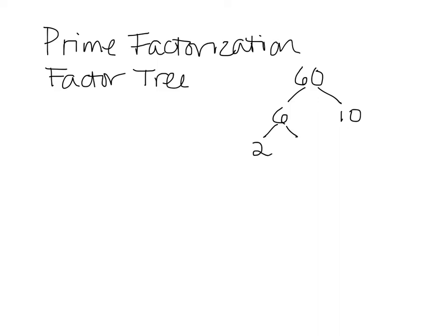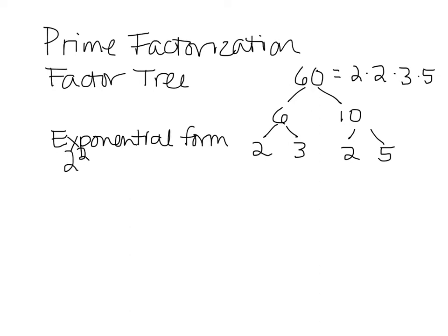And you just keep breaking it down until you have only primes. And so, therefore, the prime factorization of 60 is 2 times 2 times 3 times 5. That's the expanded form. The exponential, because we're using exponents, would be 2 squared times 3 times 5.